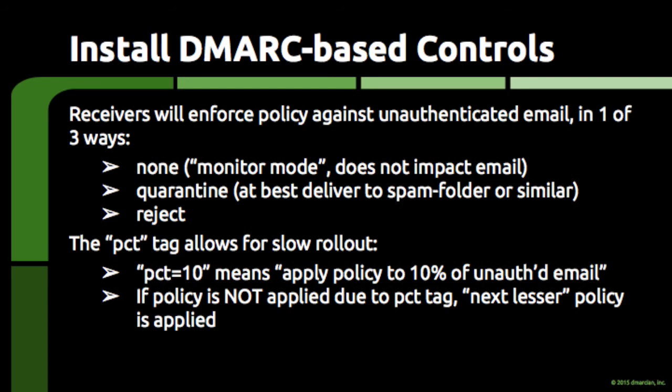As domains go through and complete the three-step loop, DMARC-based controls can be installed. Start with a quarantine policy to make sure results are expected and to give the project team time to respond to unanticipated issues. When confident that DMARC coverage is accurate, move to a reject policy. As more domains move through the three-step loop, the organization develops checklists and expertise around the ongoing operation of DMARC.